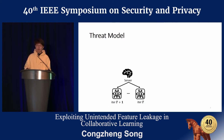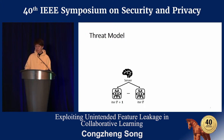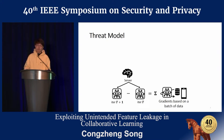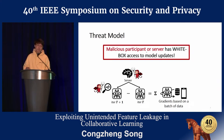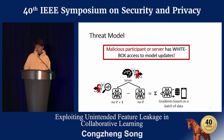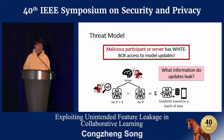Here's our threat model. Participants can access the global model in each iteration of training. The difference between the models in two iterations equals the aggregation of model updates submitted by all participants in the previous iteration — and those updates are just gradients computed on a batch of client data. By nature, a malicious participant or the server has white-box access to the model updates, because they join the training and can observe changes in the global model. The question is: what information do these model updates leak?